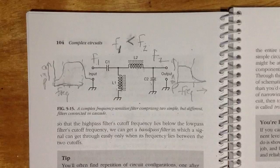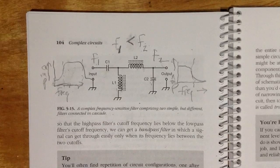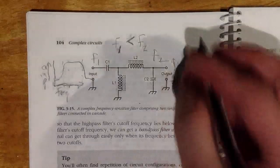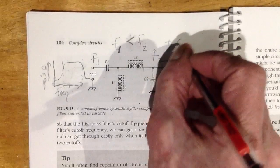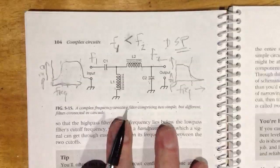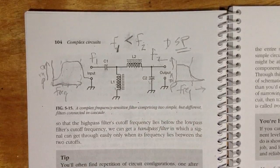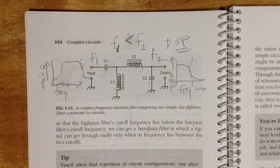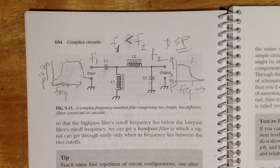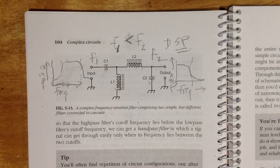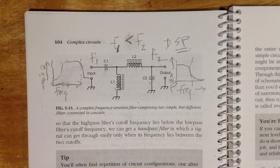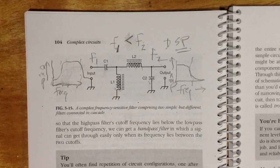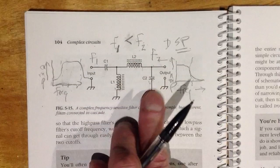All of this said, modern digital signal processing or DSP trumps all of this analog technology when it comes to the effectiveness of band-pass, low-pass, and high-pass filters. Digital technology trumps it. So all of this is kind of a meaningless exercise.